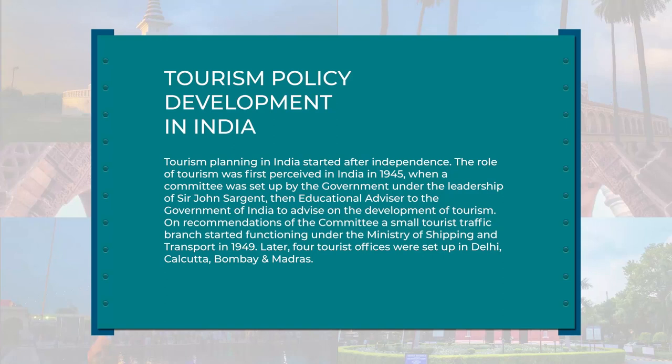The role of tourism was first perceived in India in 1945 when a committee was set up by the government under the leadership of Sir John Sargent, the then educational advisor to the government of India, to advise on the development of tourism. On the recommendations of the committee, a small tourist traffic branch started functioning under the Ministry of Shipping and Transport in 1949.